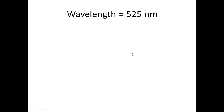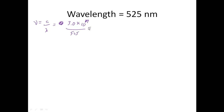Let's do the last one. We have 525 nanometers. Notice the wavelength is given to you in nanometers. So as a result, when we calculate frequency — which is the speed of light divided by the wavelength — we're going to use our nanometers version. So that's going to be 3.0 times 10 to the 17th nanometers per second divided by 525. When we do that, we come up with a frequency of 5.71 times 10 to the 14th.